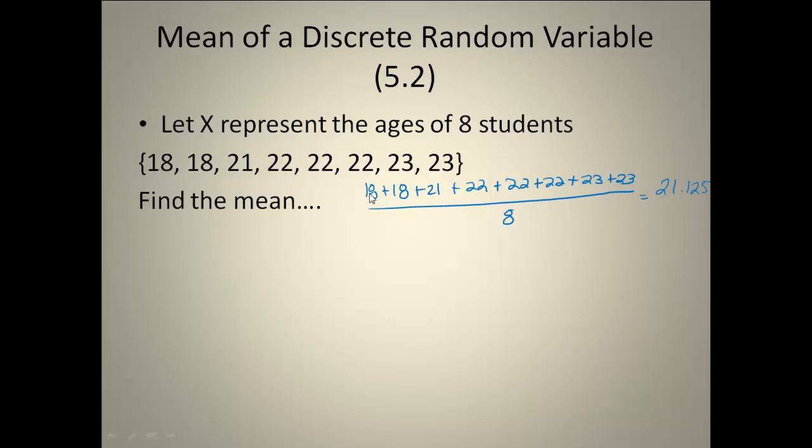Now a different way we could look at this: instead of doing 18 plus 18, I could have actually written that as 2 times 18. My 21 would be plus, well I only have one of those. My 22, I have 3 of them. And my 23, I have 2 of those. So I could have written it a little bit shorter like that and I still would have come up with the exact same answer.